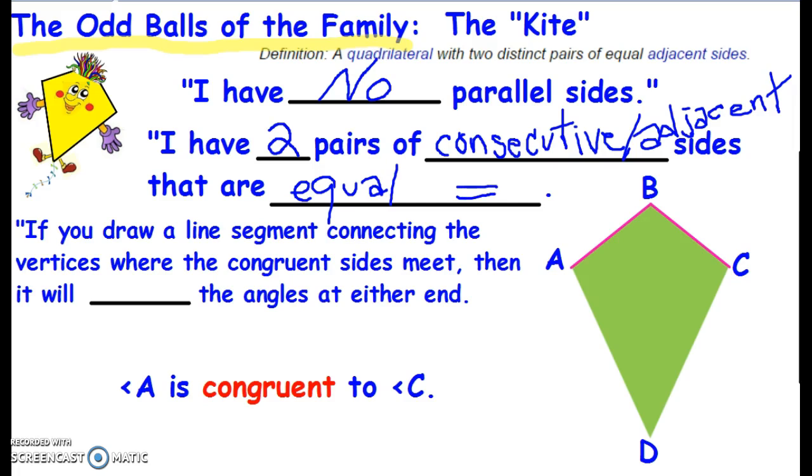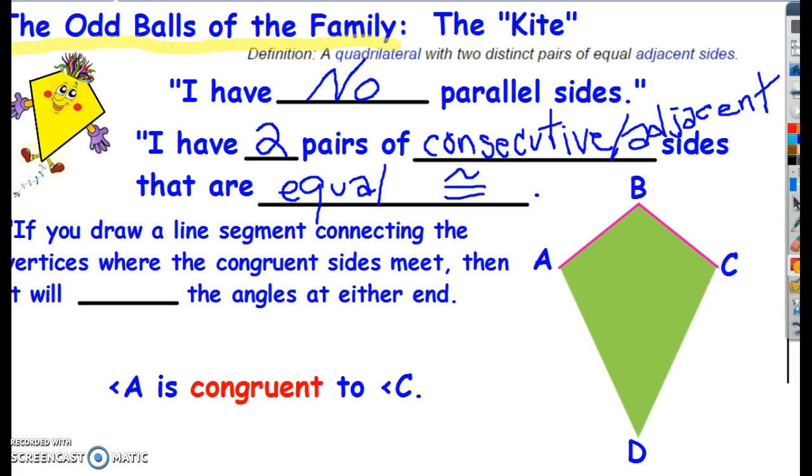We say that they are congruent. Okay, so AB and BC are consecutive equal sides. We also have AD. So that was the first pair.